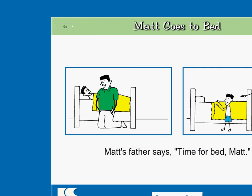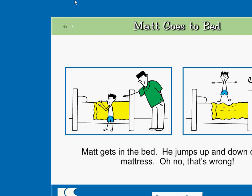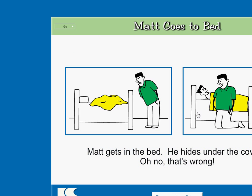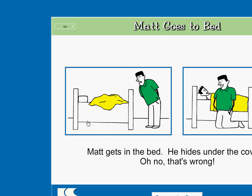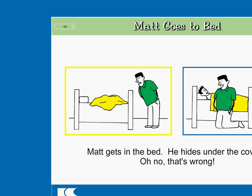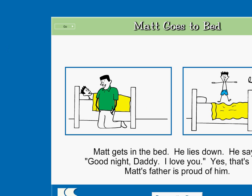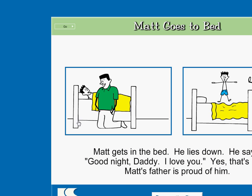Matt goes to bed. Click on the picture that matches these words. Matt's father says, time for bed, Matt. Super! Click on the picture that matches these words. Matt gets in the bed. He jumps up and down on the mattress. Oh no, that's wrong! Wow! Click on the picture that matches these words. Matt gets in the bed. He hides under the covers. You got it! Click on the picture that matches these words. Matt gets in the bed. He lies down. He says, good night Daddy, I love you. Yes, that's right. Matt's father is proud of him. Correct!